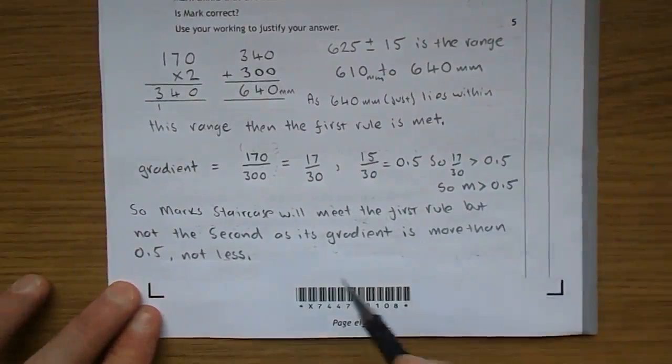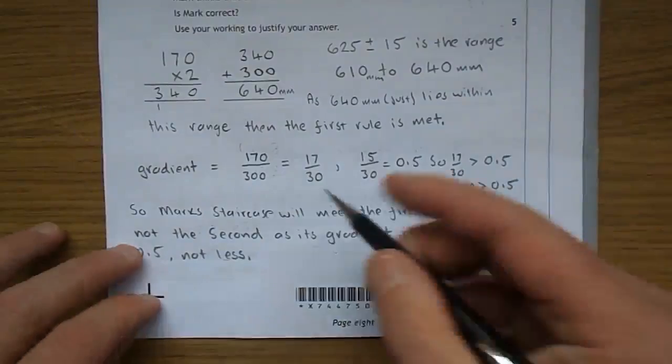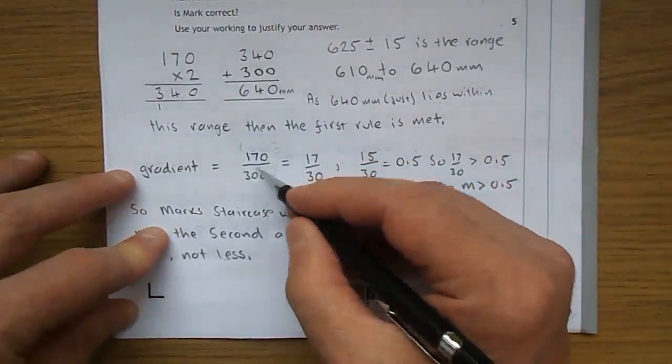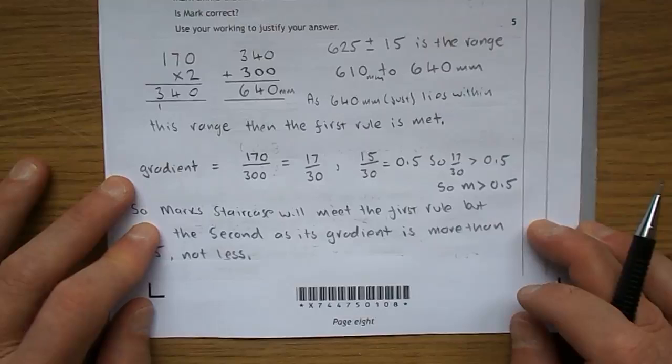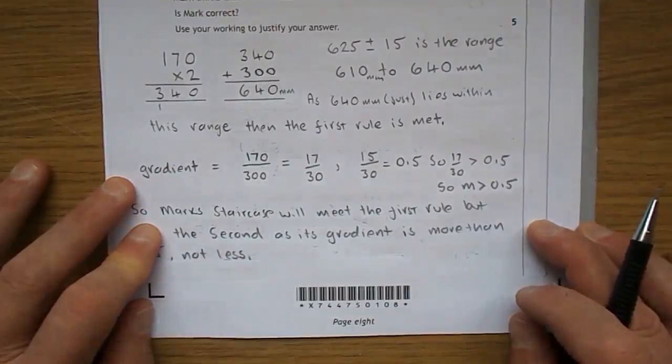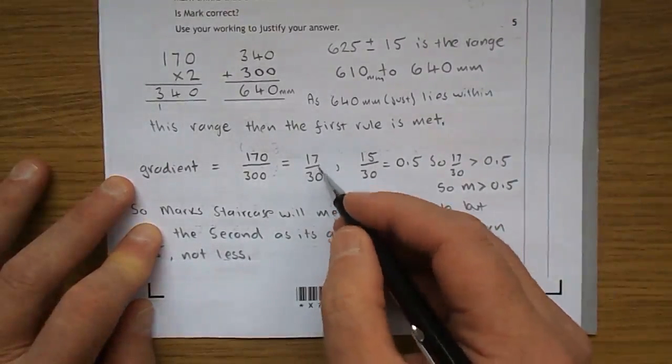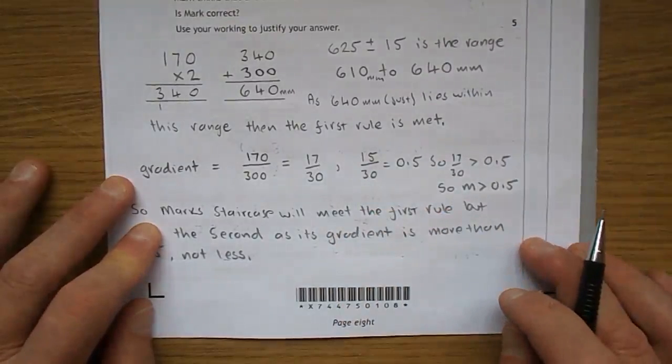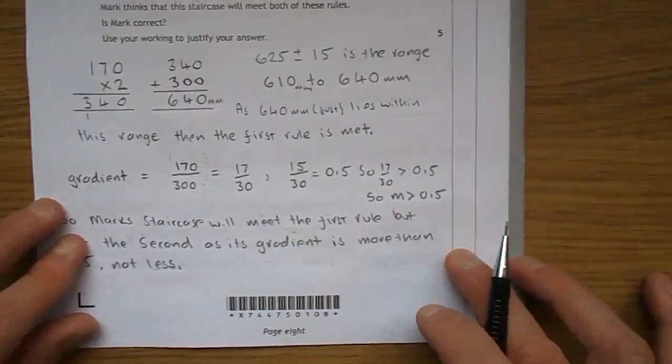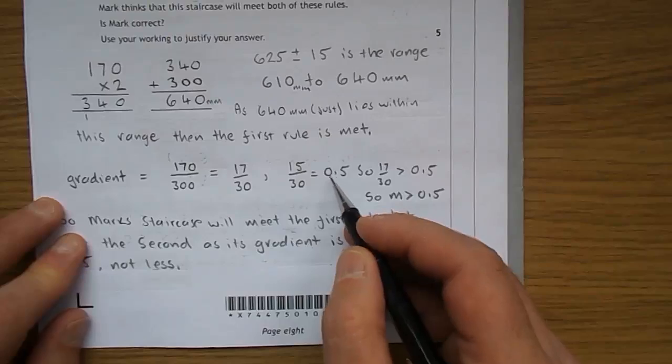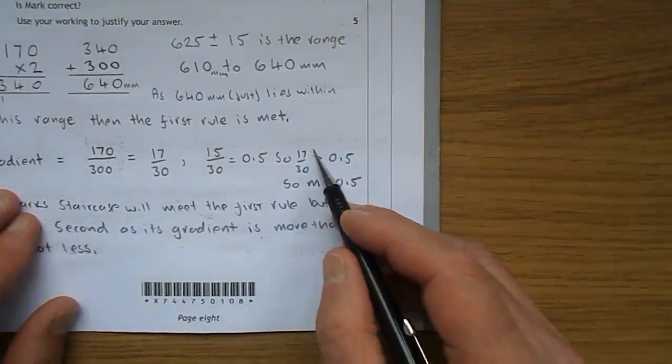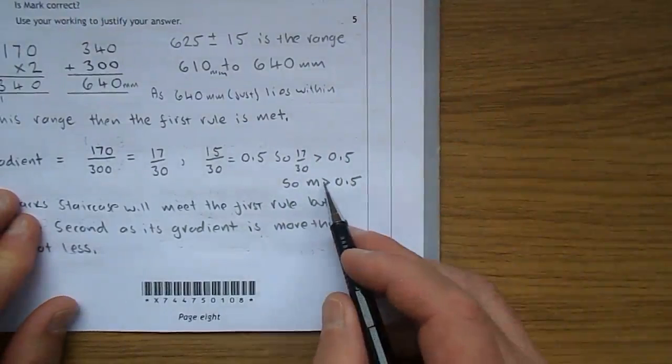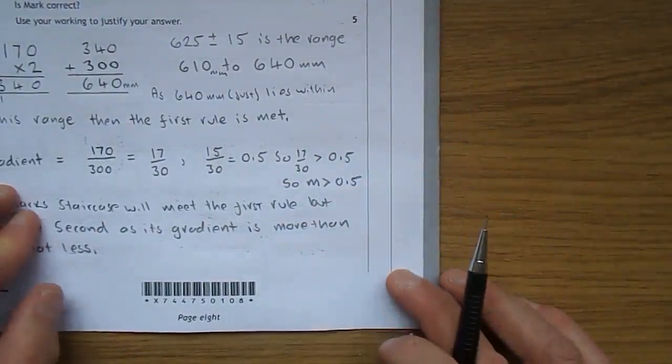Let's look at the gradient. Gradient is the up and down aspect, 170 over along the 300, vertical over horizontal. That simplifies to 17 over 30. Now 15 over 30 is a half, so it makes sense that 17 over 30 is more than a half. So the gradient is more than a half.